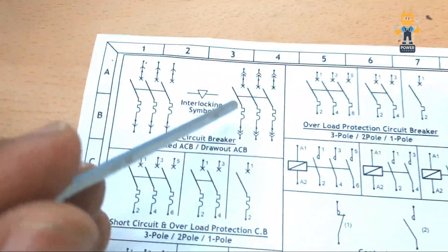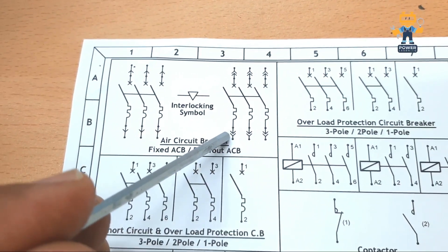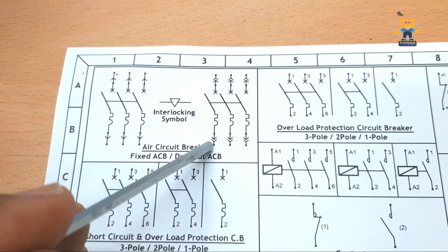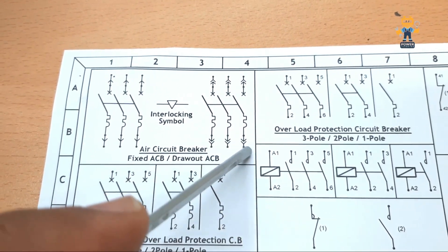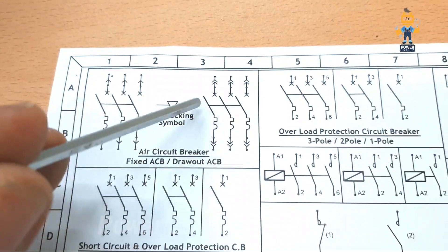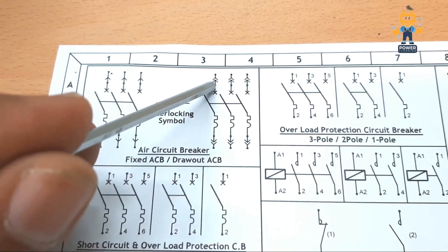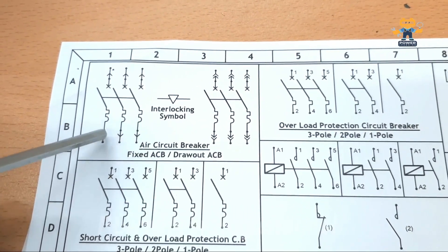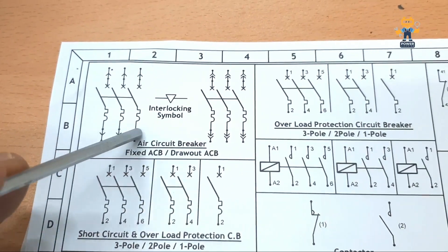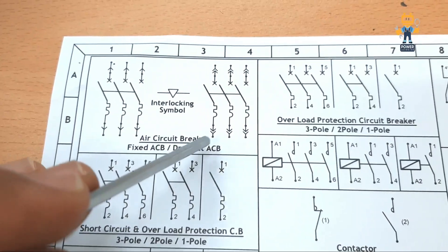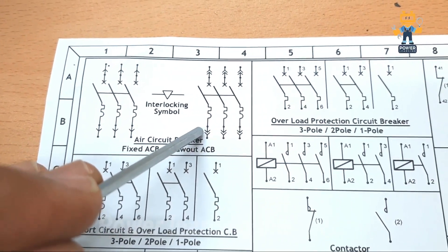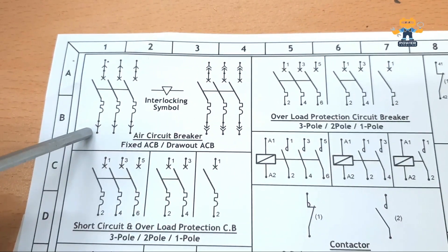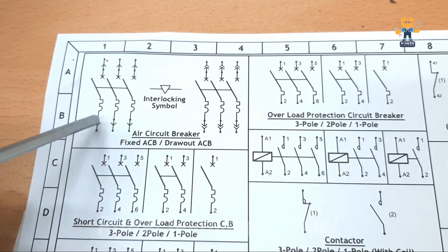How do you know which is draw-out and which is fixed? If you see these two arrows, they are showing plug-in and plug-out of the draw-out ACB — these are the panel fixed busbars on both sides, and these show the plug-in connection. For the fixed type, these contact points are fixed. Whenever you see arrows like this, it is draw-out type; this other symbol is for fixed type.